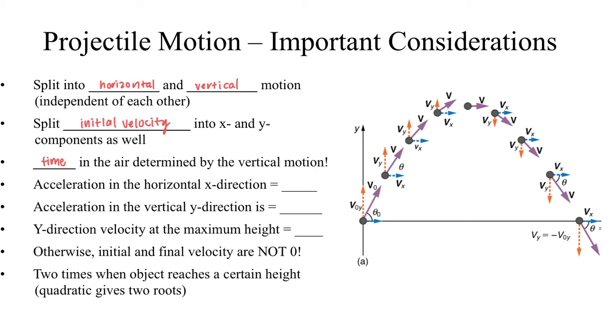We know that acceleration in the horizontal x direction is zero. You can see that in this diagram on the right. This vx is the x component of the velocity. Notice it's the same the entire time the projectile is in the air. In other words, the projectile has a constant horizontal speed. We demonstrated that in our lab as well.